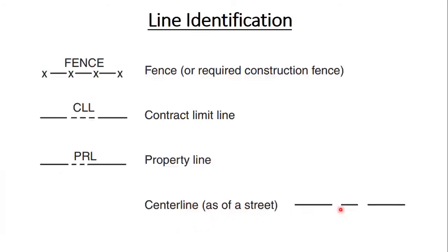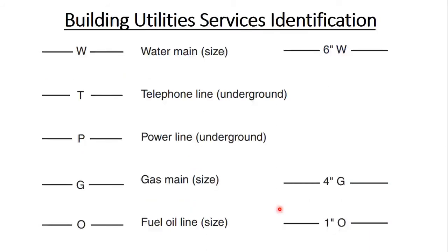Next we have building utilities service identification. The water main pipe is represented by its symbol, and if you know the size you can mention it, for example, a 6-inch water line. Telephone line underground and power line underground each have their own symbols. Gas main pipe has its symbol, and you can mention the size, for example, a 4-inch gas line. A fuel oil line can similarly note size, such as a 1-inch fuel line.